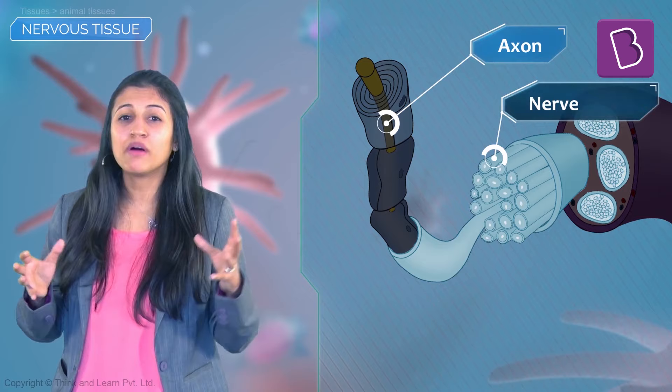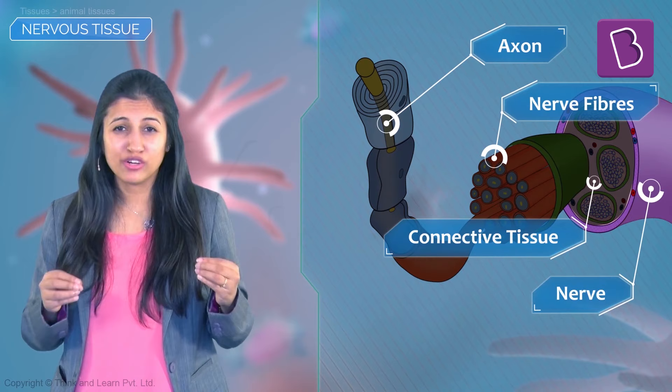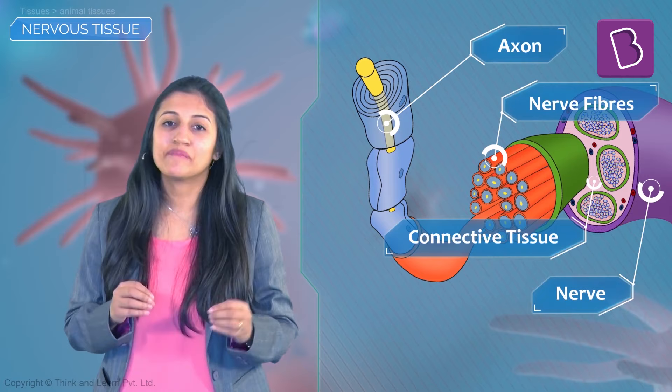Many nerve fibers bundle up together with connective tissue to make up a nerve. The nerve impulses generated allow us to actually move our muscles, so this interplay of nervous and muscular tissue is fundamental to movement. You can clearly see how different tissues come together in such perfect coordination to give you the gift of life.